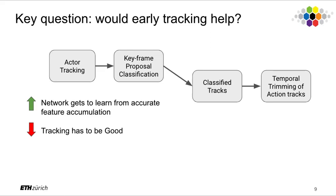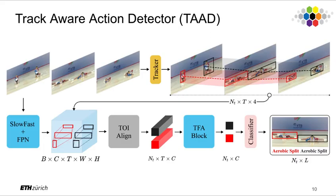We asked ourselves if early tracking would help. We hypothesize that it would help accumulate accurate features, but it could also generate unstable features if tracking is not reliable. As a result, we proposed a track-aware action detector. Given an input clip with frames, we extract features using a video network and in parallel obtain per-actor tracks from an offline tracker.